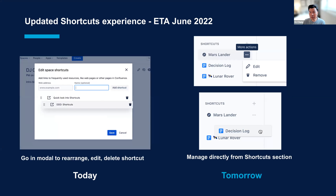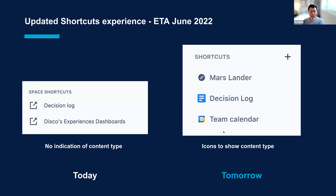Looking at ways to manage a shortcut, we'll include a quick action menu item where you'll be able to directly edit or remove a shortcut. You'll also be able to drag and drop shortcuts directly within that section to reorder them. Lastly, we're using an internal service called Smart Links, where when you add a link it'll resolve so the icon will display what type of link it is. For example, a Google Doc will have that icon, and a Google Calendar link will have its icon. We support a number of different link types and we're excited to add more personality and give you a better idea of what each shortcut is linking to.